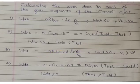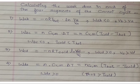For W_AB — isothermal expansion — the equation is W_AB equals negative NRT_hot times ln(V_B / V_A). Here W_AB is less than zero when the final volume is greater than the initial volume, which is expected in expansion.